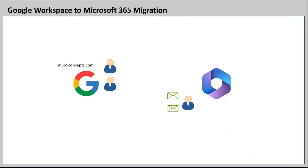So the first prerequisite for Google Workspace migration is we create a subdomain in Google Workspace. Make sure you create a subdomain for the domain that is verified within Google Workspace. For example, I'm using m365concepts.com domain in Google Workspace and I need to create a subdomain for the same domain. This subdomain allows uninterrupted email communication between the users who are migrated to Microsoft 365 and the users who are not yet migrated. When you create a subdomain in Google Workspace, it adds an email address within all the user accounts with that subdomain.